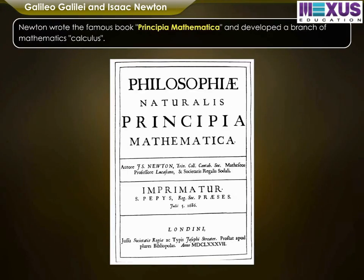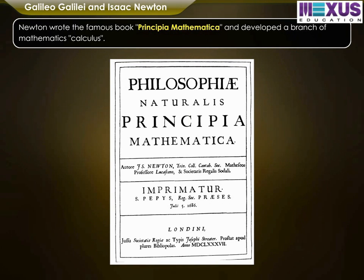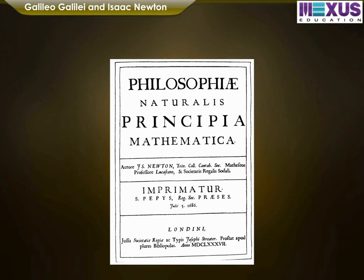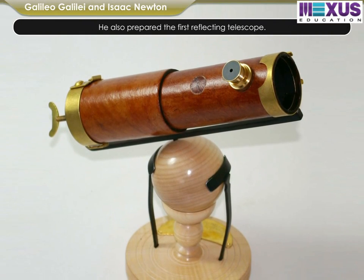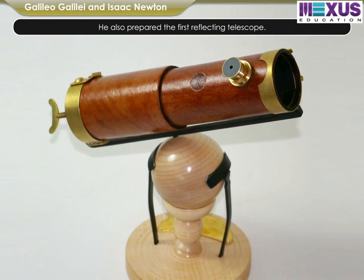He wrote the famous book Principia Mathematica and developed a branch of mathematics called calculus. He also prepared the first reflecting telescope.